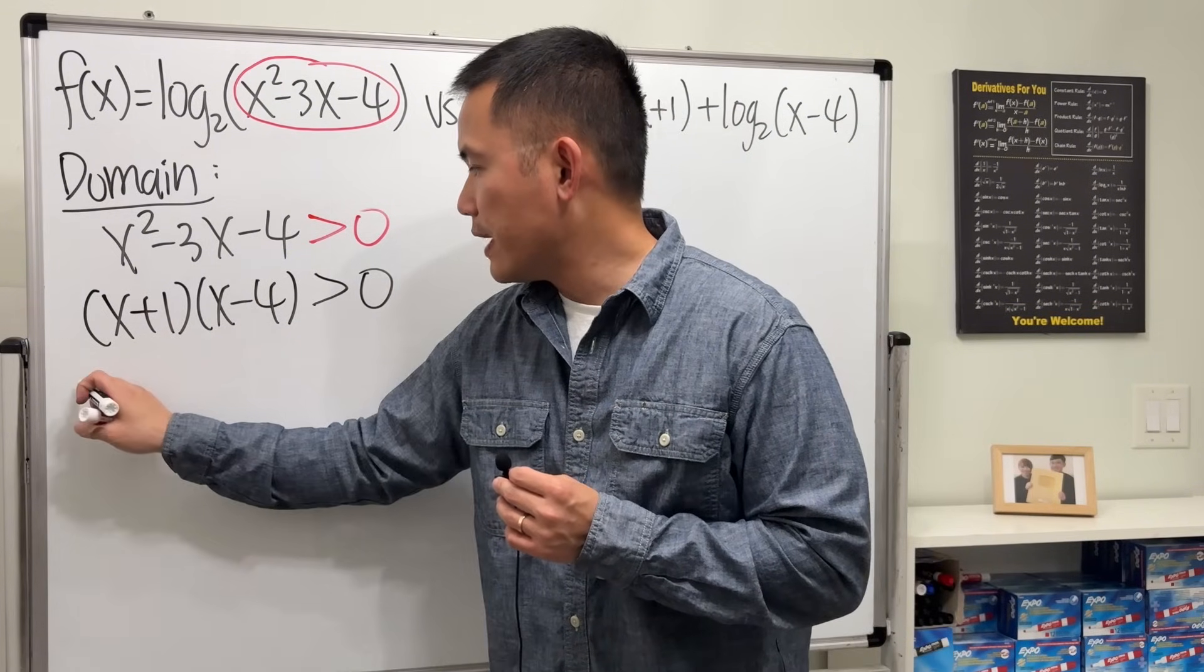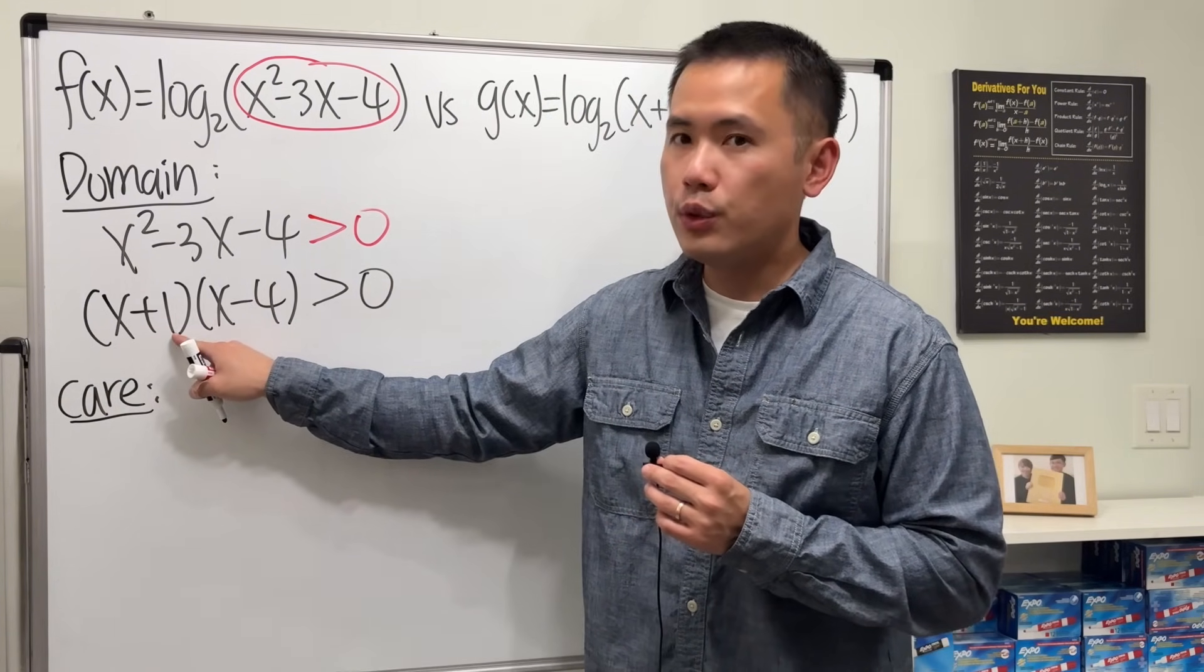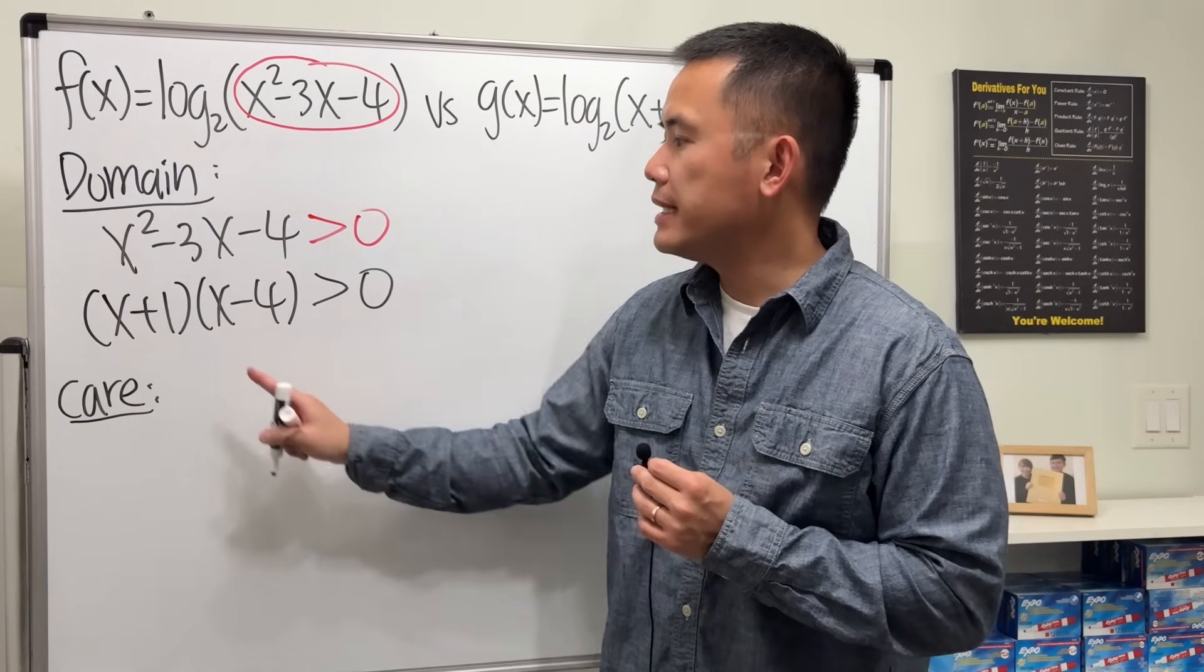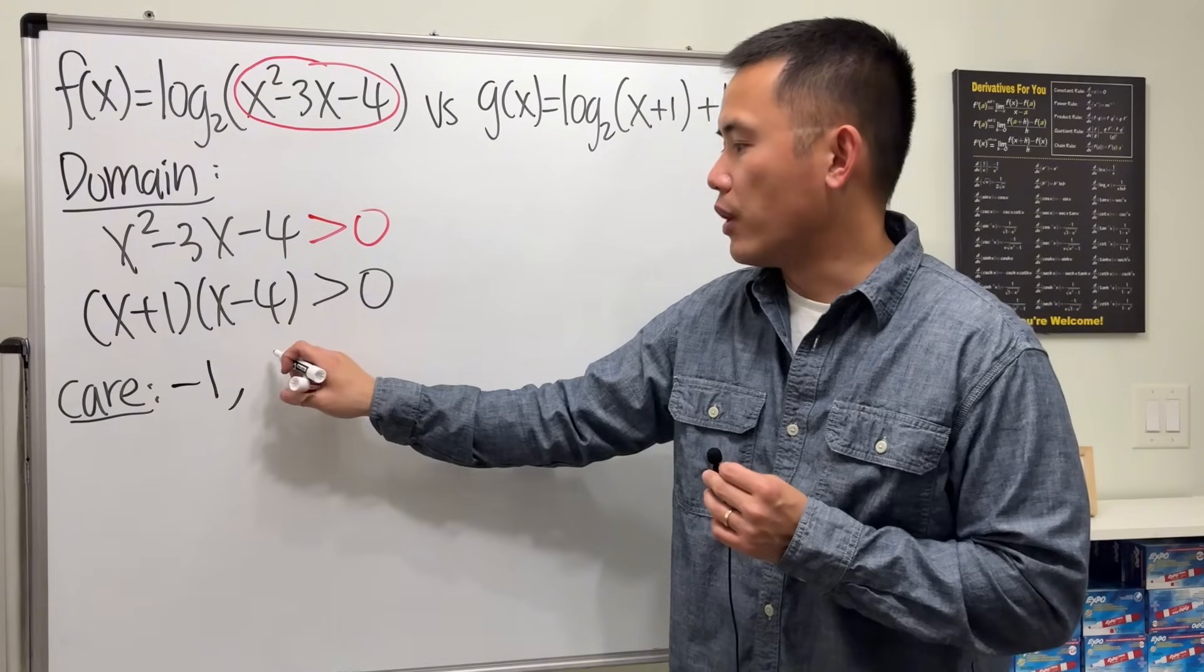Now let's go ahead and find out the numbers that we care from here. You put equal to zero, subtract 1 to both sides, x is equal to negative 1. From here you care about when x is equal to 4.